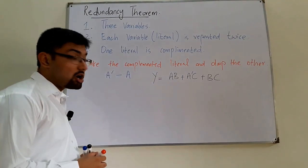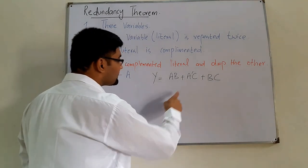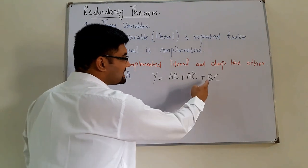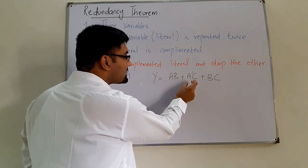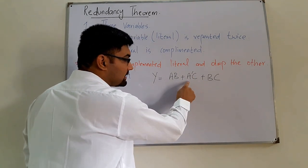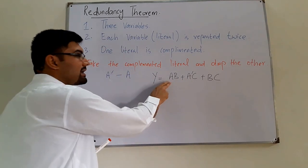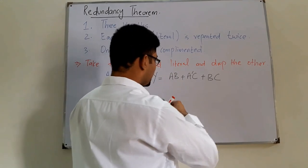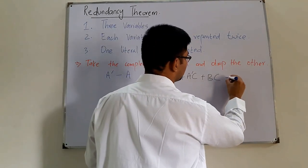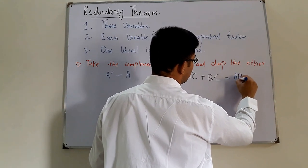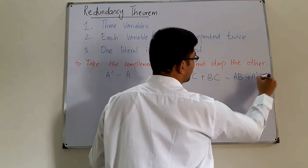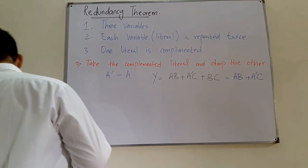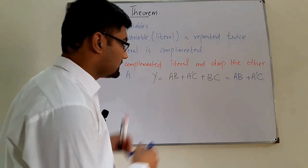Applying the Redundancy Theorem, we take the complemented variable A' and its other part A, which means we drop BC and keep the terms containing A. The simplified result after applying the Redundancy Theorem is directly AB + A'C.